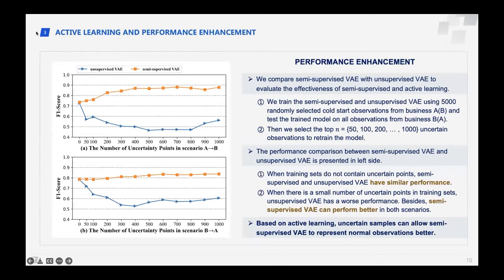To evaluate the effectiveness of semi-supervised learning and active learning, we compare the performance of semi-supervised VAE and unsupervised VAE. We train the semi-supervised VAE using 5,000 randomly selected core observations from one business and test the trained model on all observations from the other business. We then select the top uncertain observations to retrain the model. We find that when training sets do not contain uncertain points, semi-supervised and unsupervised VAE have similar performance. When a small number of uncertain points are included, unsupervised VAE performs worse, while semi-supervised VAE performs better. Based on active learning, uncertain samples allow the semi-supervised VAE to better represent normal observations.